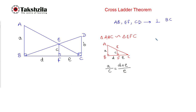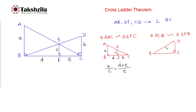Similarly, triangle DCB is similar to triangle EFB. Looking at these two triangles — triangle DCB and triangle EFB — with lengths b, c, e and d respectively. The ratio of corresponding sides gives us DC divided by EF equals CB divided by BF.